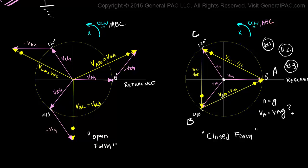The third and most confusing thing about the closed form phasor diagram is why V-A-B, V-B-C, and V-C-A are shown in this particular manner. It appears that the voltage drop for V-A-B should be from B to A, because the arrow is pointing in that direction — but what we've written down is V-A-B. Same thing here: it appears this phasor should be V-A-C because we start from A and go to C, but in reality the phasor is V-C-A. And by inspection the next one appears to be V-C-B, but in reality it's V-B-C. So the voltage drop direction isn't as what we've defined it — that's the third reason why the closed form is so confusing.